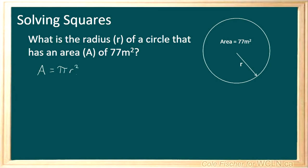So we're trying to isolate R. We'll start off by dividing both sides by pi. That gives us A divided by pi on one side, and on the other side both pi's cancel, so we're left with R squared.